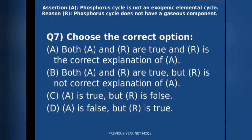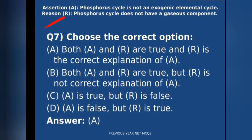Question 7 is an assertion-reason type question. Assertion: the phosphorus cycle is not an exogenic elemental cycle. Reason: the phosphorus cycle does not have a gaseous component. The correct option is A — both assertion and reason are true. Phosphorus is not found in the atmosphere in gaseous phase because it follows an endogenic elemental cycle.